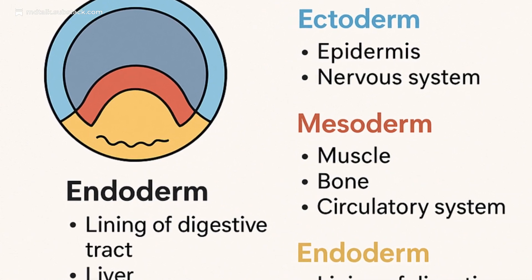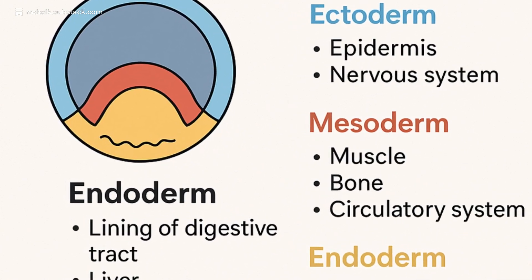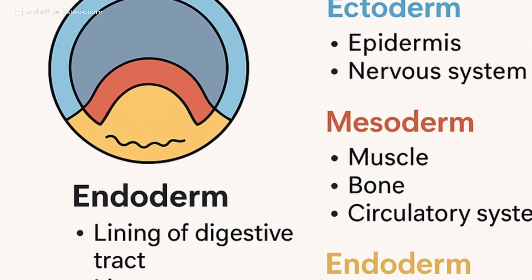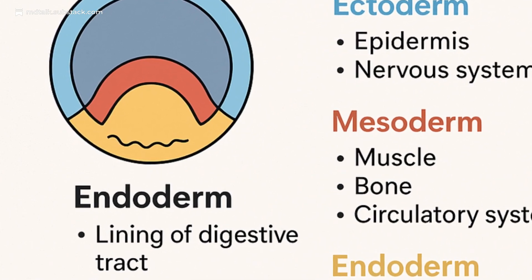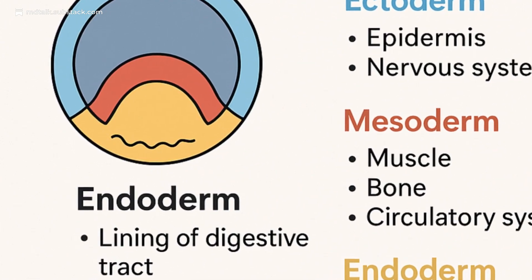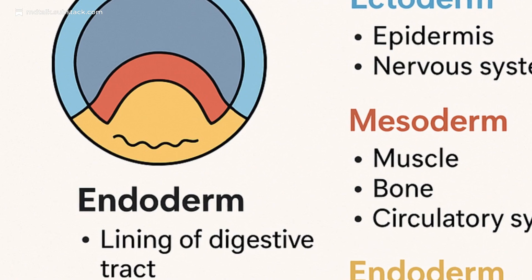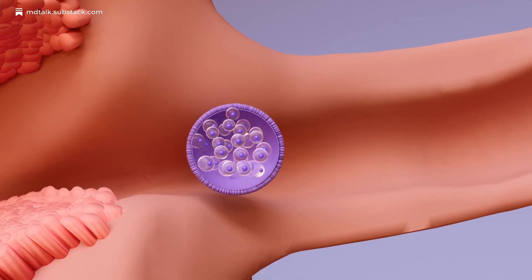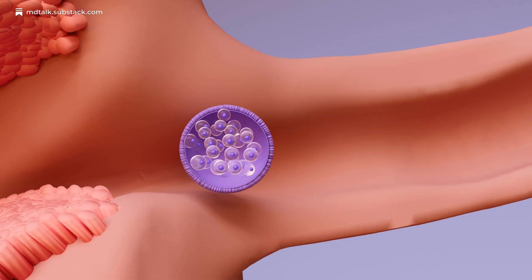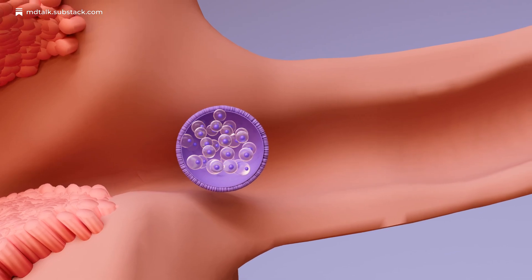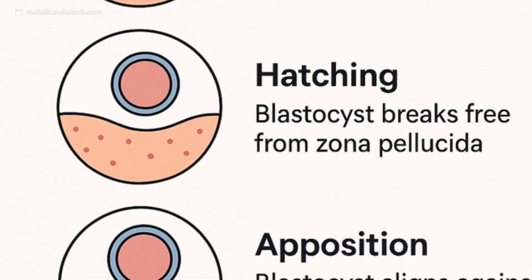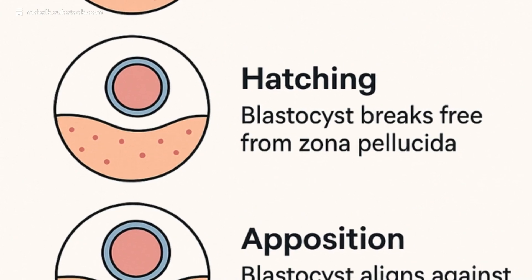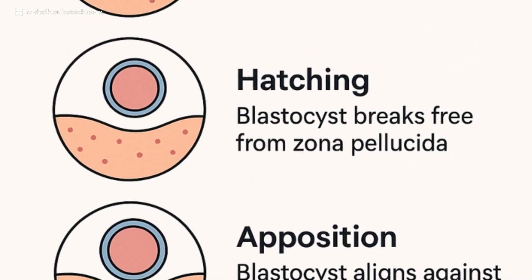Meanwhile, the blastocyst hatches and reaches the uterus. It loosely attaches, then anchors with integrins and mucins. The syncytiotrophoblast aggressively invades, embedding the embryo in the endometrium. Days 19 to 23 mark the window of implantation. Estrogen primes the lining, progesterone maintains it. Anandamide, integrins, and ELIF orchestrate molecular readiness.